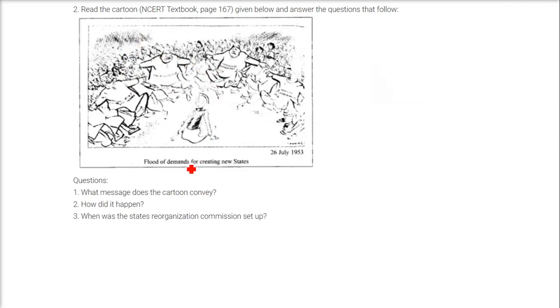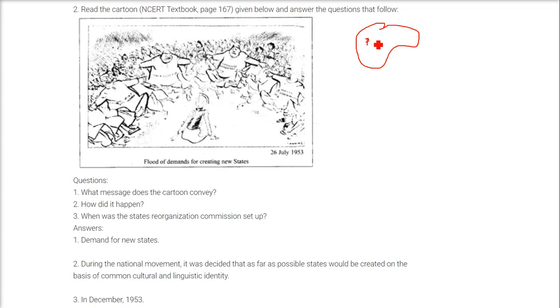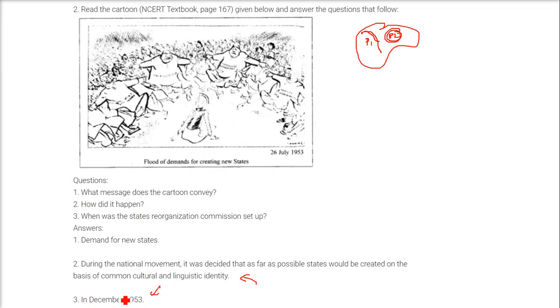Another cartoon shows floods of demands for creating new states. The message is that in a state with two political parties, the party not in power also wants power and demands a separate state. During the national movement it was decided that states would be created on the basis of common culture and linguistic identity, but people feel this is not always happening. The States Reorganization Commission was set up in December 1953.